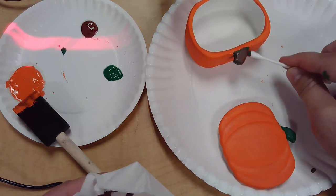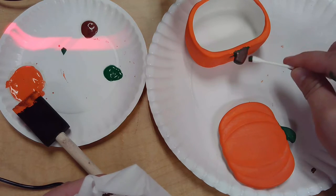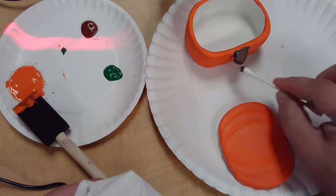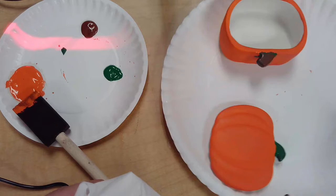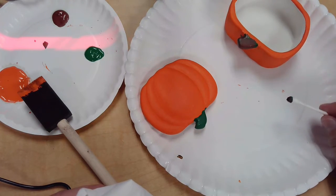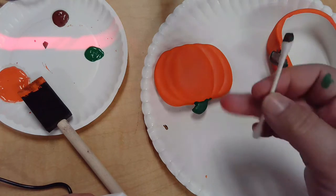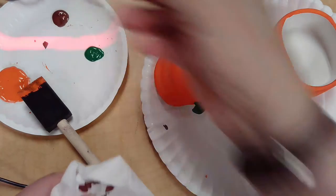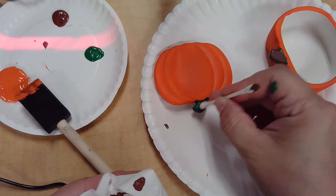So you can dab it on a tissue or paper towel or your paper plate so that you don't have a big clump of brown on your q-tip. So this way I'll end up with a greenish-brownish stem.